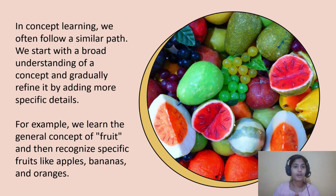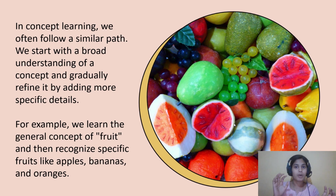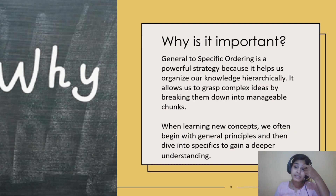In concept learning we often follow a similar path — we start with a broad understanding of a concept and gradually refine it by adding more specific details. For example, we learn the general concept of fruit and then recognize specific fruits like apples, bananas, and oranges. First you learn about fruits and keep it in a general shelf; then you learn about apple, grapes, and banana and keep those books in their specific shelves.